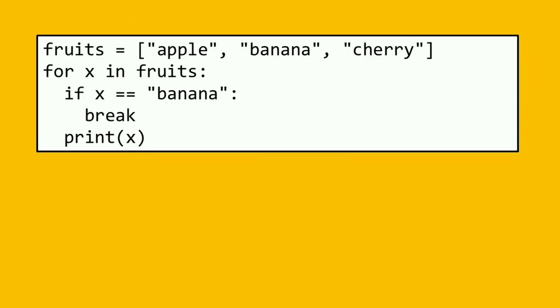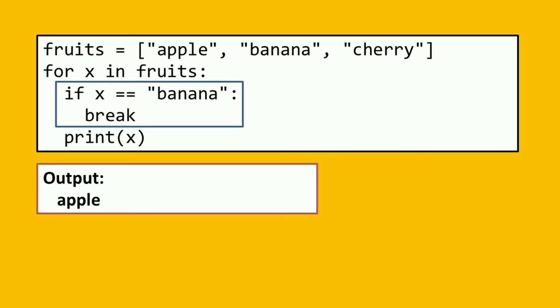The next, we have this code. So sa loop na to, meron ulit tayo ng if x is equal to banana and meron siyang keyword na break. So if we're going to run the program, isipin natin ang output lang po niya is display lang yung apple. Kasi, second element na po yung banana. So ibig sabihin, yung first element lang yung ma-preprint. Or once na ang value ng x is banana, mag-i-stop na po yung loop.